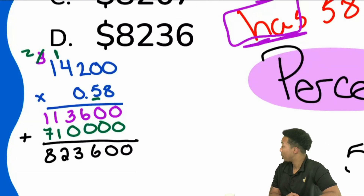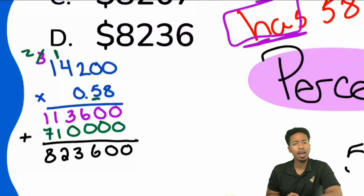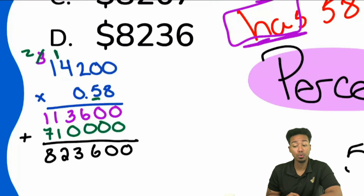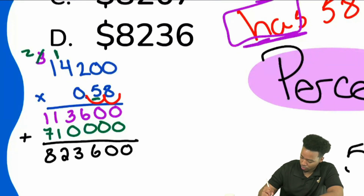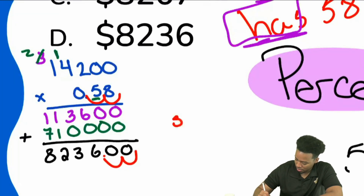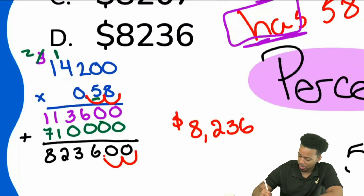With all that work done, how many decimal places do we move back? We bring them all back — it's 2, because we have 1, 2 and 1, 2. So the final answer: Barbara has $8,236.